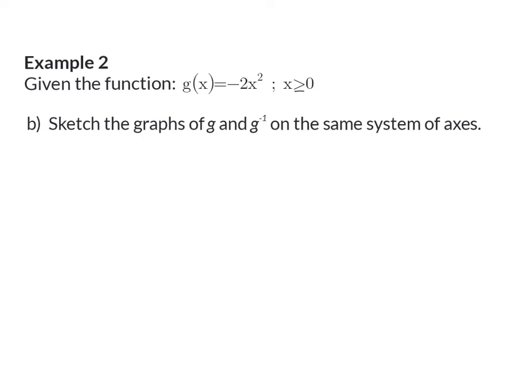Question B, sketch the graphs of g and its inverse on the same system of axes. Function g is only the positive half of our parabola. And now we need to add two coordinates on this. We already know that it intersects the x and y axis at 0, 0. And then I'm going to substitute 1 into x to get another coordinate, and the y value that goes with that will then be minus 2.